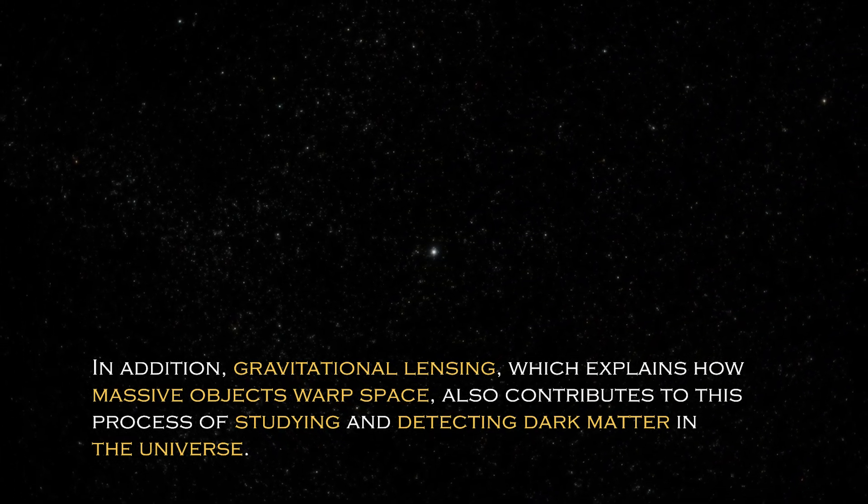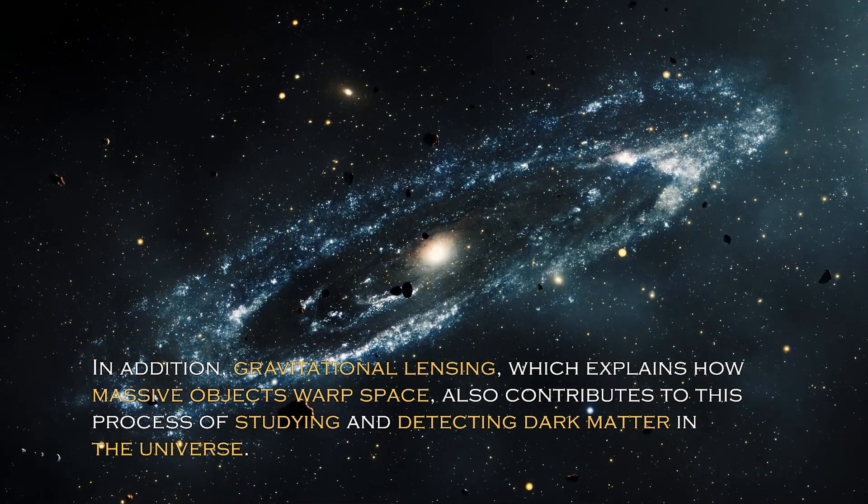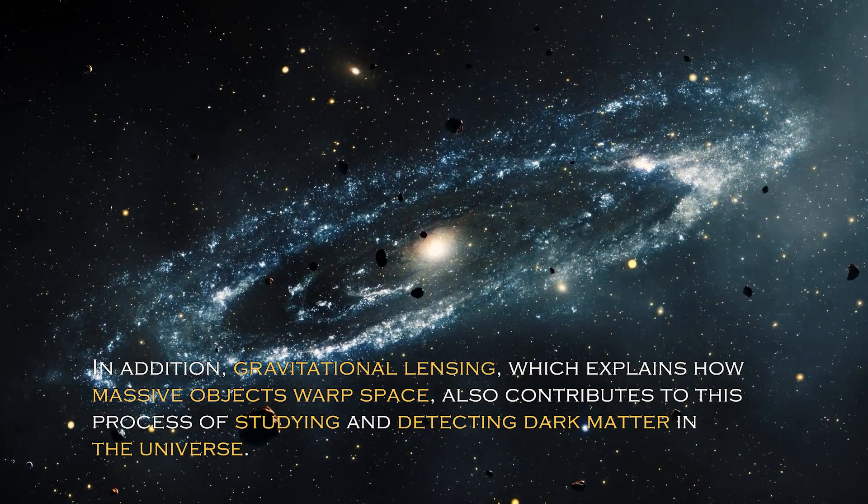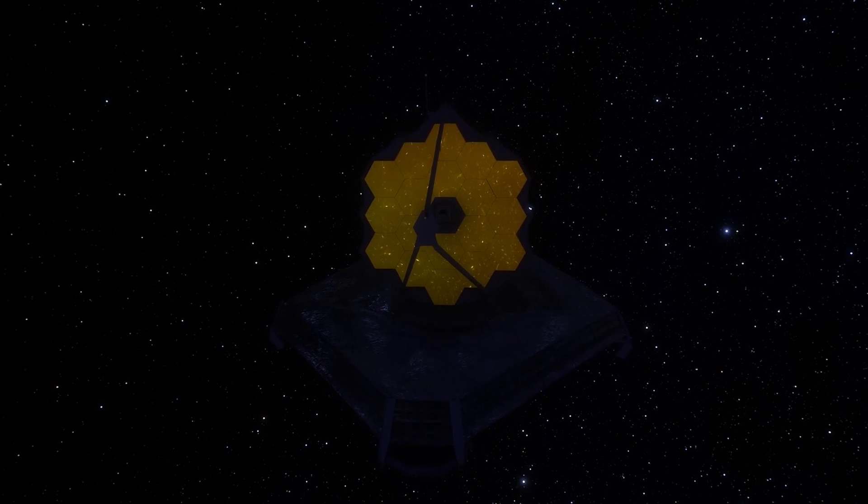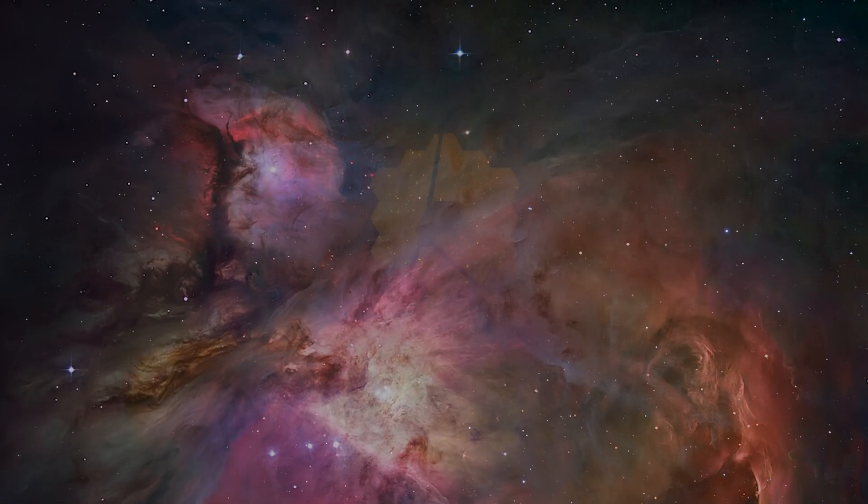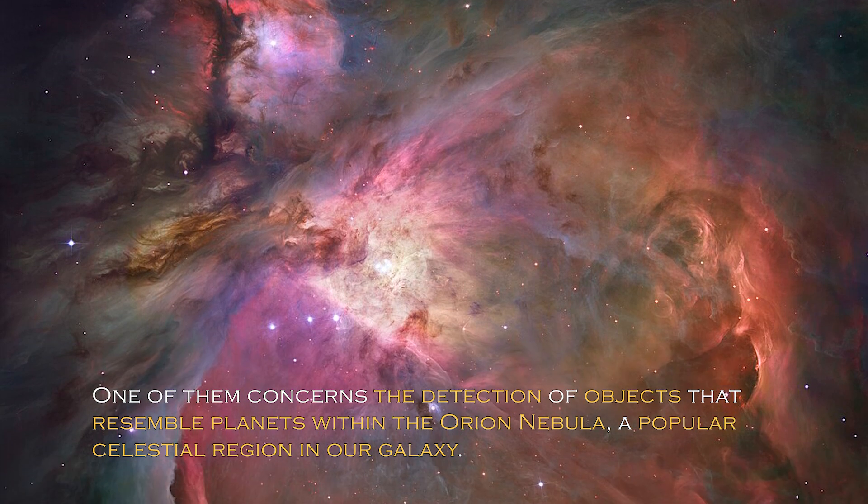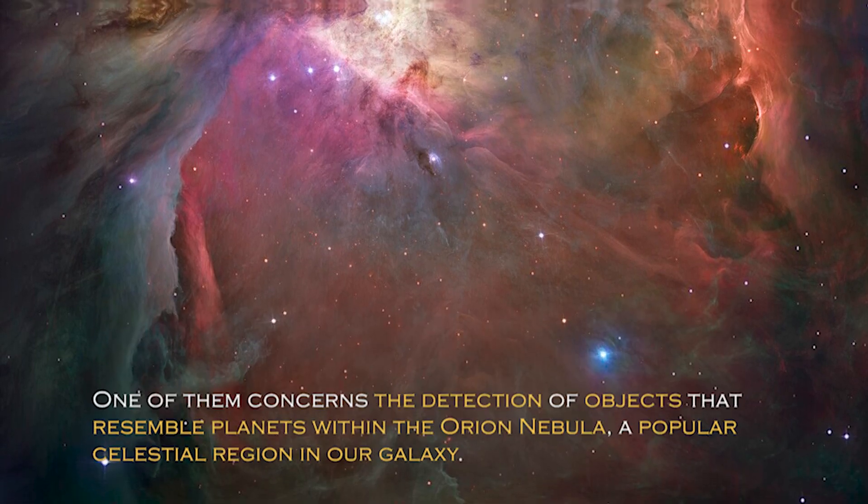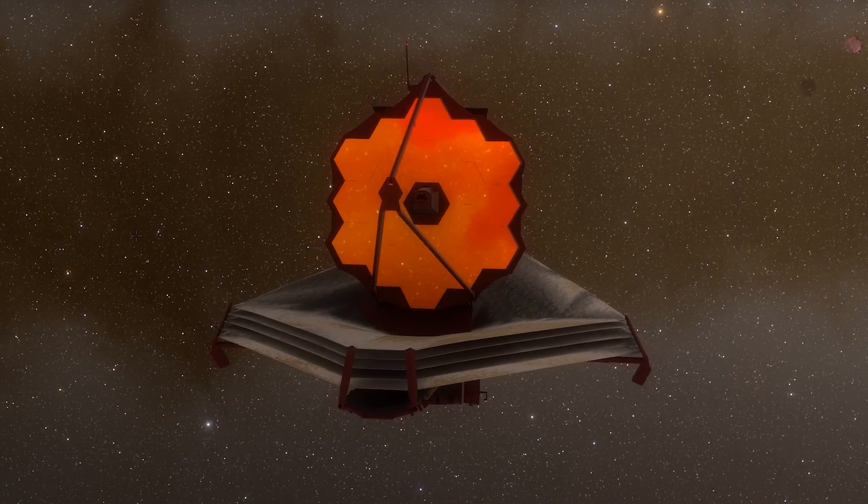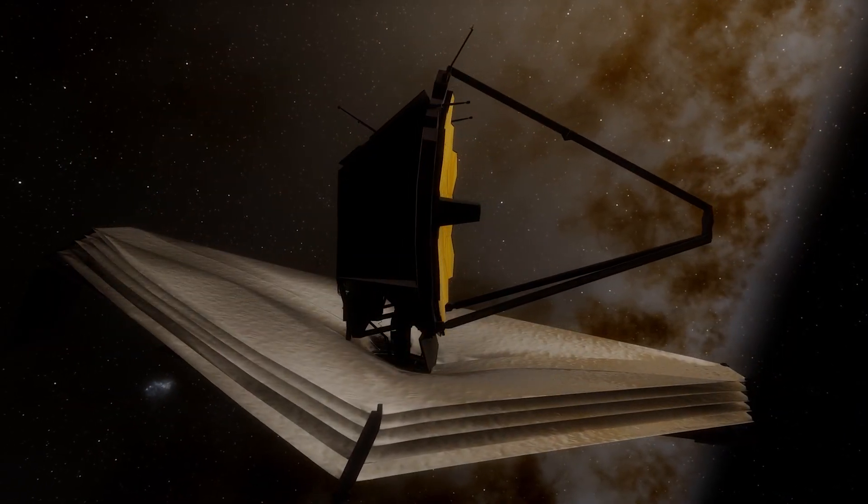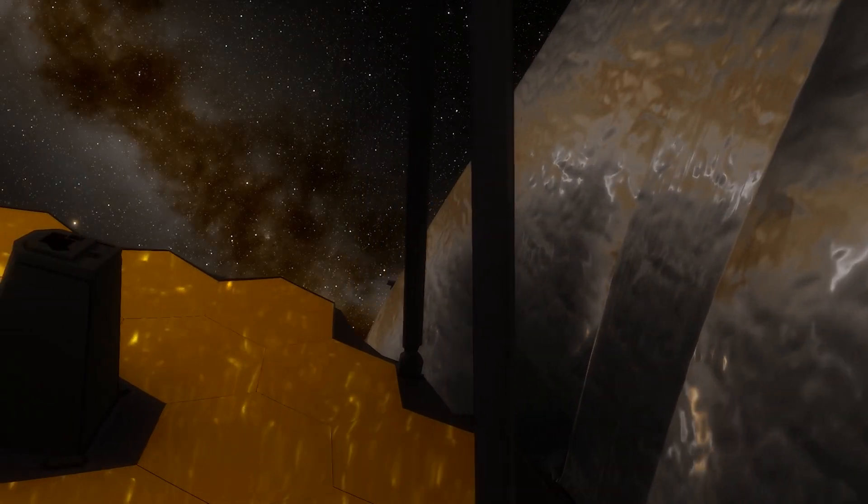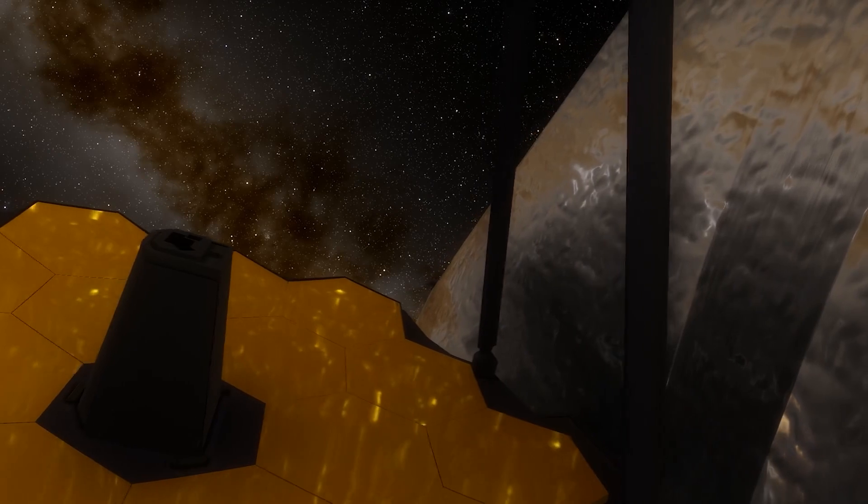In addition, gravitational lensing, which explains how massive objects warp space, also contributes to this process of studying and detecting dark matter in the universe. The James Webb telescope has recently made remarkable discoveries. One of them concerns the detection of objects that resemble planets within the Orion Nebula, a popular celestial region in our galaxy. Previous studies had not revealed such objects in this cosmic cloud of dust and gas until the James Webb made their detection possible. These discoveries are just a sampling of several interesting findings that the James Webb telescope has recently unleashed.